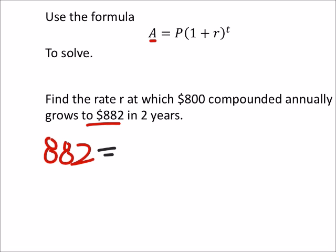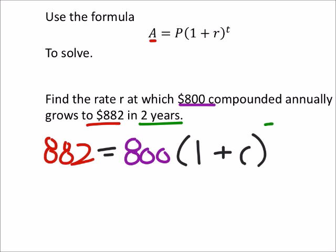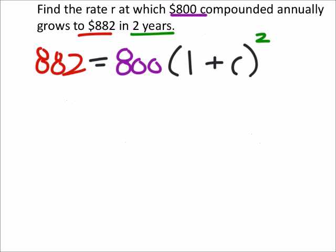And this is going to equal the principle which is what we started with initially, putting into the account, which in this case is $800. Then we got the rest of this: one plus the rate. We don't know the rate, that's what we're solving for. And t is the amount of time, which is two years. So solving this, we want that binomial squared all by itself, so we're going to divide both sides by 800.